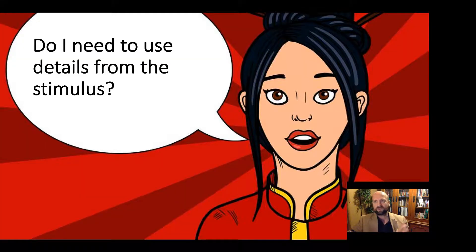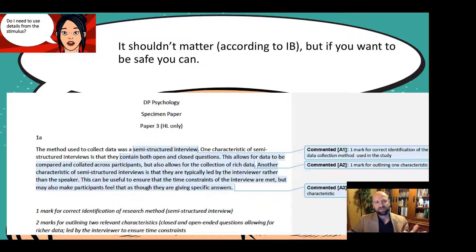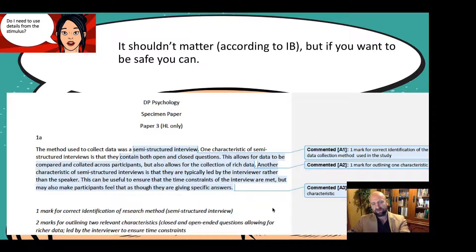Another common question: do you need to use details from the stimulus in your answer? According to the IB, it shouldn't matter. When I did workshop leader training, we looked at a specimen mark paper where a student got full marks — one for stating the method, two for the characteristics — with no mention of the stimulus material at all. They literally memorized the definitions of a semi-structured interview and got three full marks. So you don't need stimulus details, but if you want to be safe, just add one sentence from the stimulus.